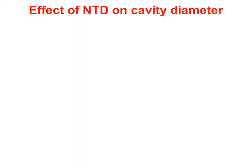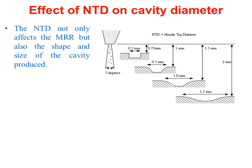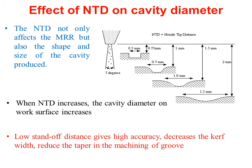The effect of SOD on cavity diameter. From this diagram, we can understand that SOD not only affects the MRR but also the shape and size of the cavity produced. When SOD increases, the cavity diameter on the work surface also increases. Low standoff distance gives high accuracy, decreases the kerf width, and reduces the taper in machining of the groove.